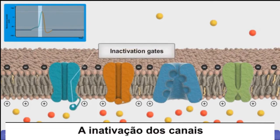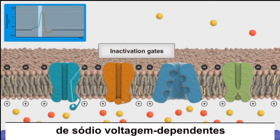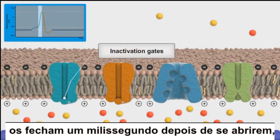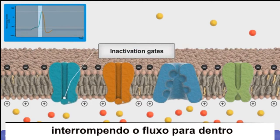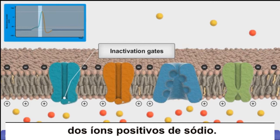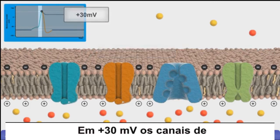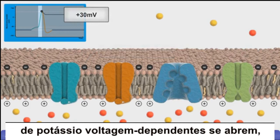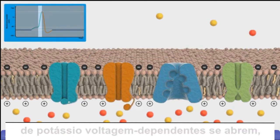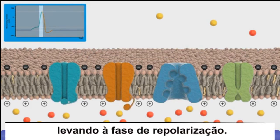The inactivation gates of voltage-gated sodium channels close one millisecond after they open, stopping the inward rush of positive sodium ions. At plus 30 millivolts, voltage-gated potassium channels open, leading to the repolarization phase.